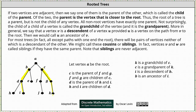For most trees, there will be pairs of vertices neither of which is a descendant of the other — we can call these cousins or siblings. Vertices v and w are called siblings if they have the same parent. Note that siblings are never adjacent. Going back to our graph, notice vertices f and g share the same parent c, so f and g are siblings. Similarly, vertices d and e share the same parent, so d and e are siblings. Also notice vertices e and f are on the same level but have different parents — we could say e and f are cousins.